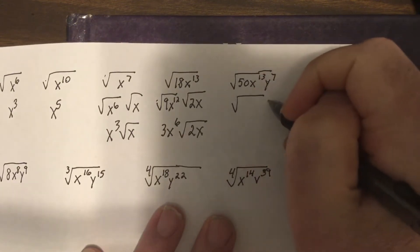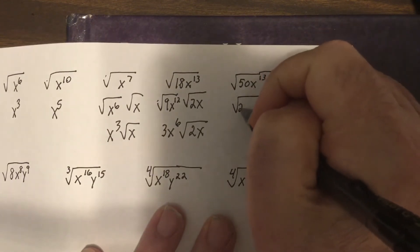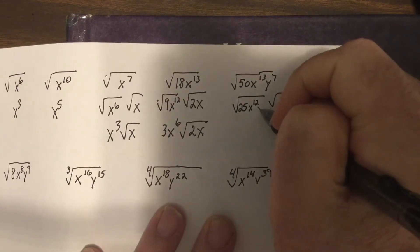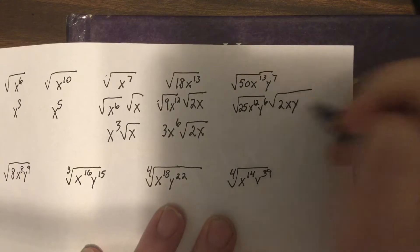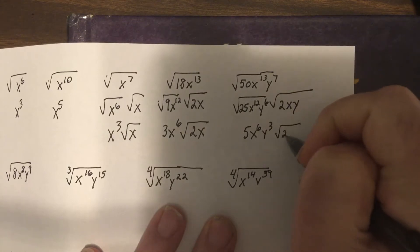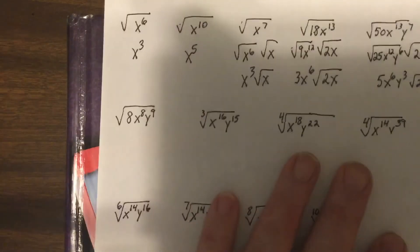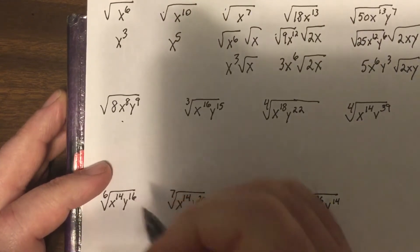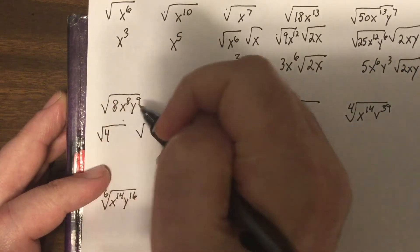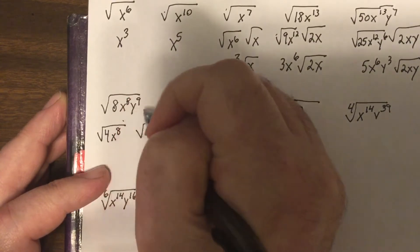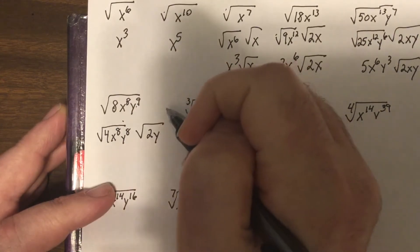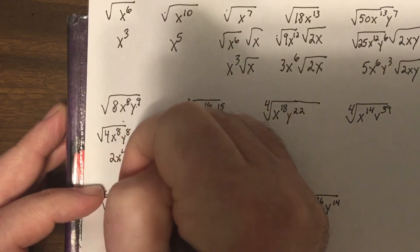Continuing with more variables: for the square root of 25X to the 13th Y to the 7th, the perfect square part is 25, X to the 12th, Y to the 6th — all divisible by 2. The leftover is 2XY. So the answer is 5X to the 6th Y cubed times the square root of 2XY. Try the next one yourself: the square root of 4X to the 8th Y to the 9th gives 2X to the 4th Y to the 4th times the square root of Y.